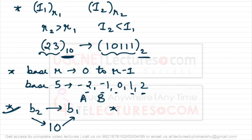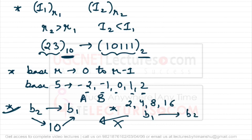The exception is when the bases are powers of 2 — for example, base 2, base 4, base 8, or base 16. In that case, we don't use the decimal intermediate. Instead, if you have a number in base b1 and need to convert it to base b2, and both are powers of 2, you convert from b1 to binary first, then from binary to b2.